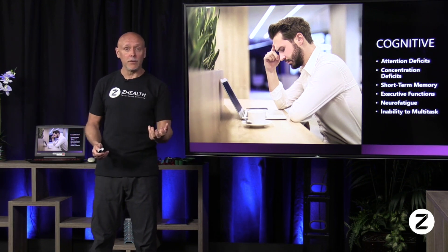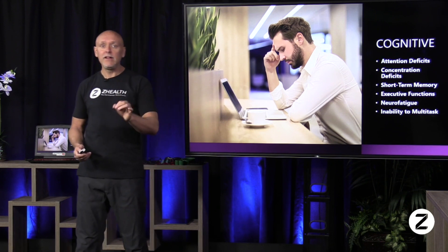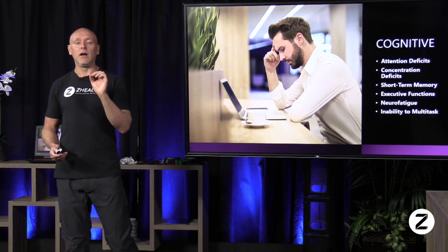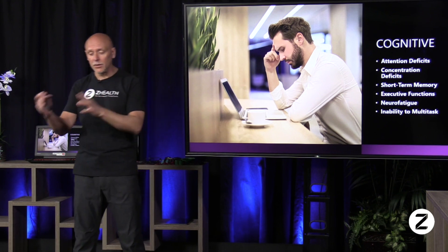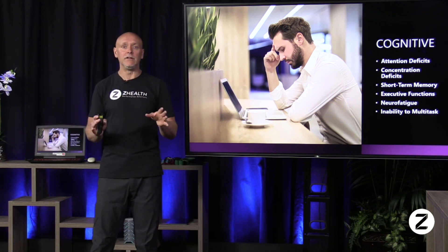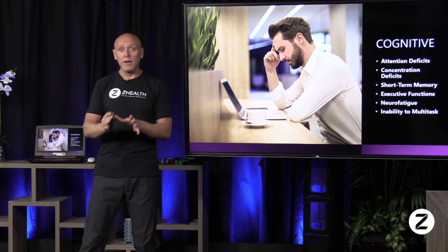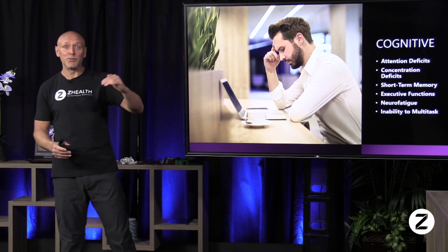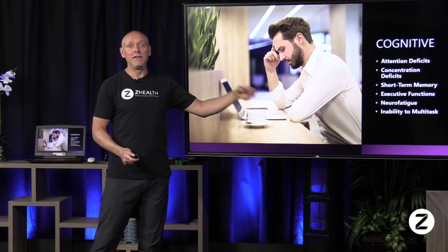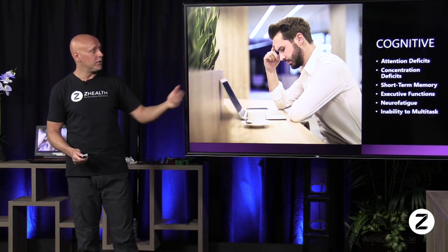You may observe some of these symptoms, or you may need to ask about them. When taking histories on people who have had a brain injury, as long as they've agreed to it and it fits within your legal standards, it's also very helpful to get information from family members or people who've spent time with them, because they may actually be much more aware of these changes than the person experiencing the issues.